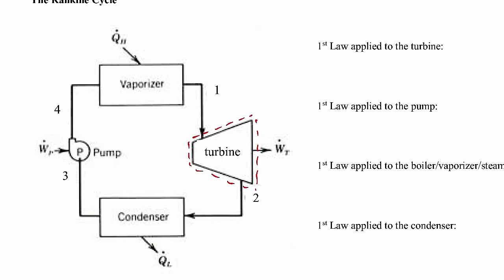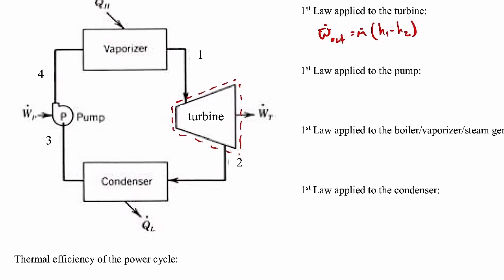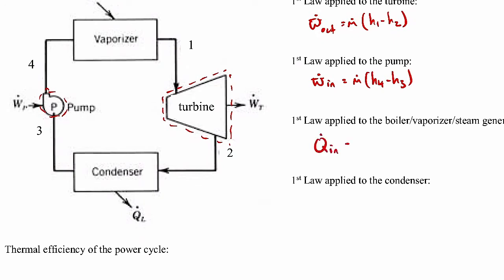Applying the first law to the control volume surrounding the turbine, the power out equals m-dot times (h1 minus h2), neglecting heat transfer, kinetic and potential energy effects, and assuming steady state. For the pump, the power in is m-dot times (h4 minus h3). Around the boiler, the heat transfer in is m-dot times (h1 minus h4). Around the condenser, q-dot out equals m-dot times (h2 minus h3). These are first law analyses applied to control volumes — all review, nothing new here.